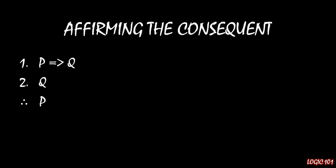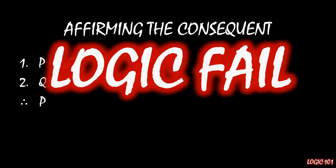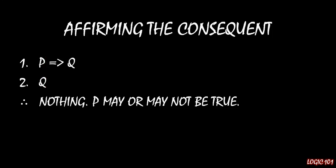We call this affirming the consequent because we have q as the consequent in the implication on line 1, and in line 2, we affirm it by saying that it's true. But as it turns out, this is a logical fail — that's not how this works. If you have this information, you can't conclude anything about p.